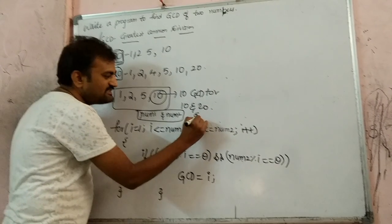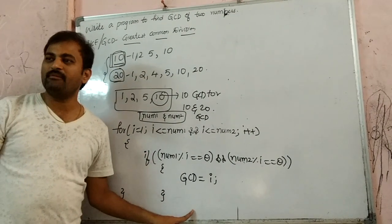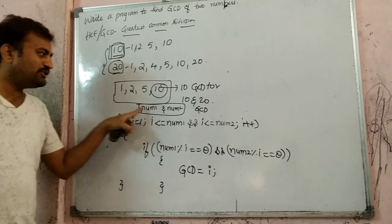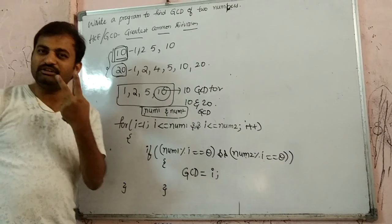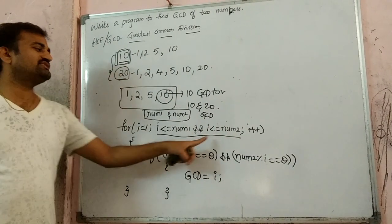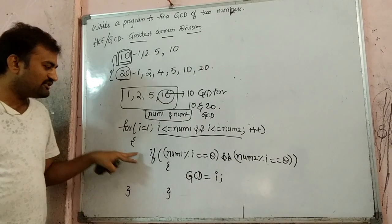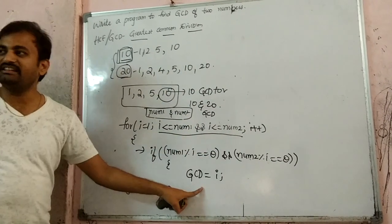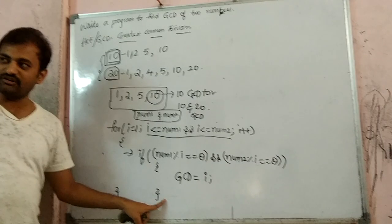So you will take another extra variable called gcd. So what we are doing here is writing code to find the greatest common divisor. We need to talk about two numbers: num1 and num2. We know how to find the factors of one number. Here, instead of finding one number, we are finding two numbers at a time. So for that reason, we write the condition as i less than or equal to num1 AND i less than or equal to num2 — meaning we are finding factors of both of them at a time.